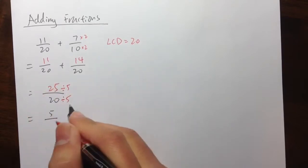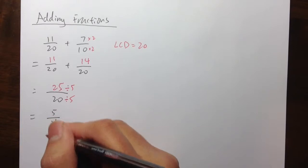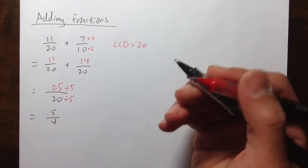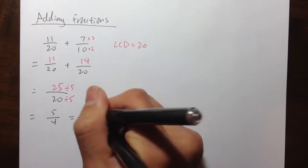And then 25 divided by 5, we get 5, over 20 divided by 5, we get 4. We are not done yet! Because sometimes we have 5 over 4, we need to write that as a mixed number. This is an improper fraction. So 5 over 4, we can also write it as 1 and 1 over 4.